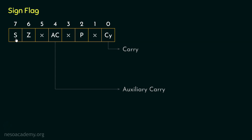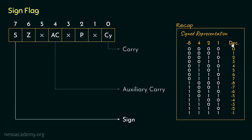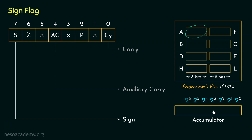That was all about the carry and auxiliary carry flags. Let's now learn about the sign flag. In the flags register, bit position number 7, annotated by S, is reserved for the sign flag. At the beginning of this chapter, we learned about the word length of the microprocessor and the signed representation of 4-bit binary numbers. In 4-bit binary, the place value of the most significant bit is a negative value, which is why a 1 in that place gives us negative numbers. For the 8-bit accumulator, place values go from 2⁰ to 2⁶, but the most significant bit has a place value of −2⁷.